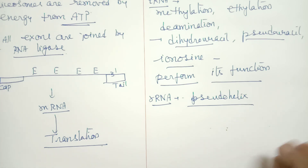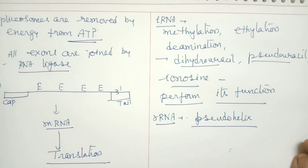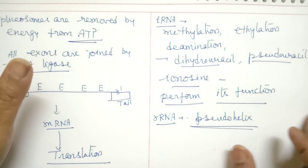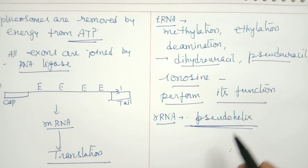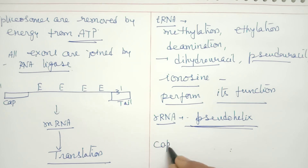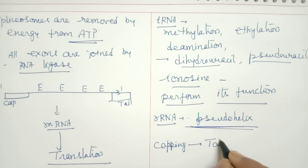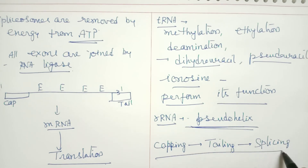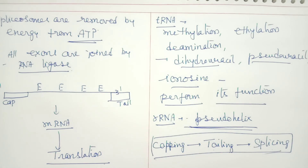These are some of the important features in the case of eukaryotes. The main complexities we discussed are: types of RNA polymerases, and post-transcriptional changes. Remember students, the sequence of post-transcriptional changes is: first capping, followed by tailing, then splicing. In this sequence, hnRNA gets modified and finally changes into mature mRNA.